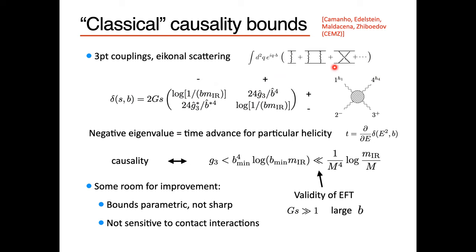The diagonal elements of the eikonal phase matrix depend on G Newton, coming directly from graviton exchange in Einstein gravity. The off-diagonal elements are given by the R-cubed coupling. The matrix structure arises because we're scattering gravitons of different helicities from some target. There is a time delay in this classical scattering experiment, and the time advance or time delay is given by a derivative of the phase. If this matrix has a negative eigenvalue, there will be a time advance for some helicity configuration.